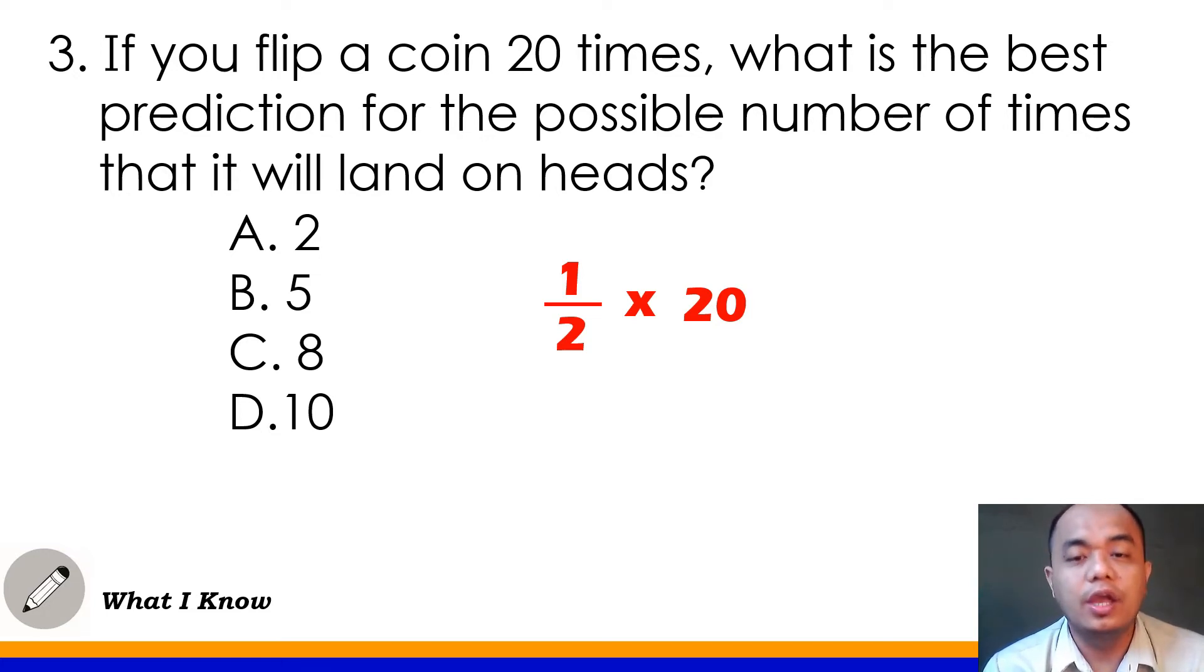So can you still remember how to multiply fraction and whole number? Yes, very good. Para mas madali mo maintindihan, yung whole number dito i-convert muna natin sa fraction. Maglalagay lang tayo ng denominator na 1 sa 20. So that's over 1. So yung kanina, one half times 20, same lang yung ibig sabihin sa nakikita nyo ngayon sa screen, yung one half times 20 over 1. Now, can you still remember how to multiply fractions? Yes, we just multiply numerator by numerator and denominator by denominator. So pwede natin i-apply yan kasi maliit lang yung mga numbers dito. So we can do that.